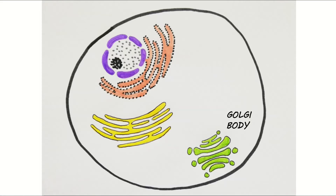For example, carbohydrates may be attached to a protein to make a glycoprotein. Once the refining process is complete, the finished protein buds off the end of the Golgi in a vesicle and floats off to where it's needed, either inside the cell or outside.